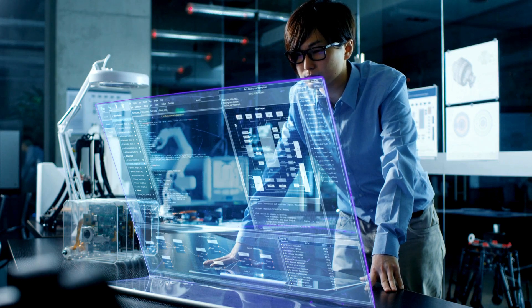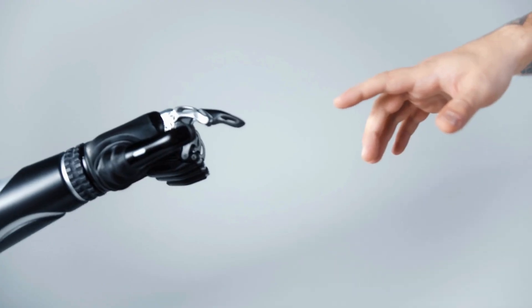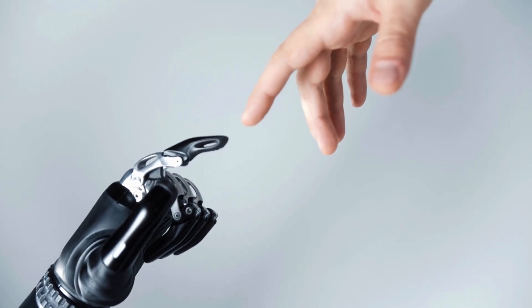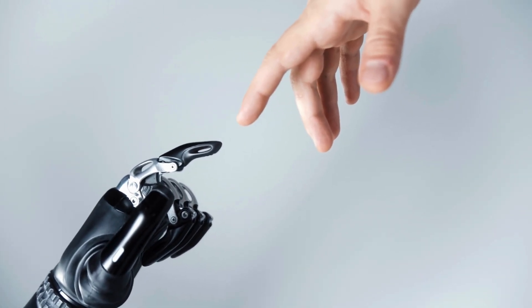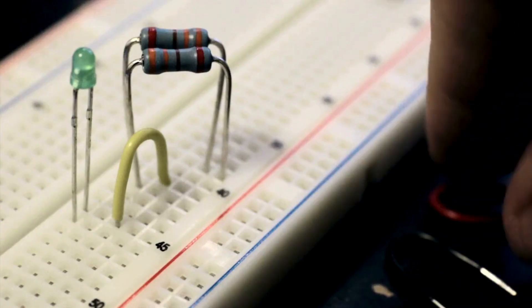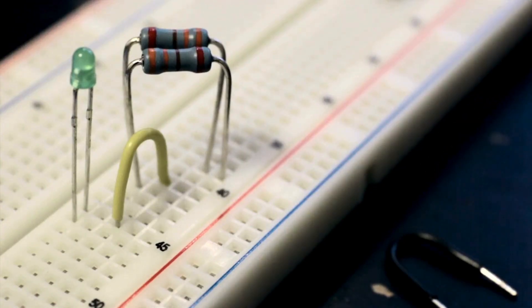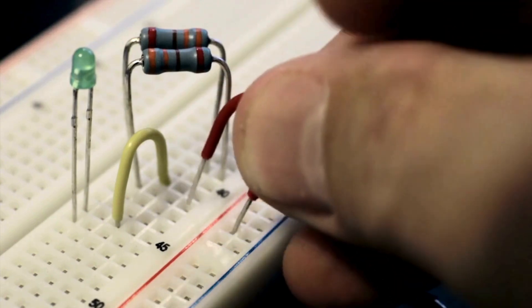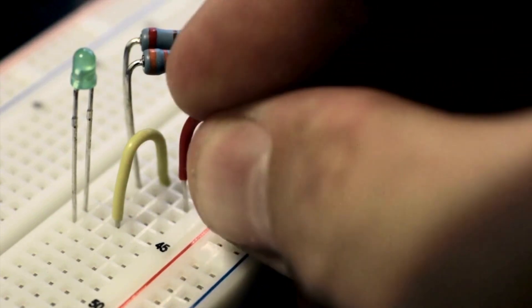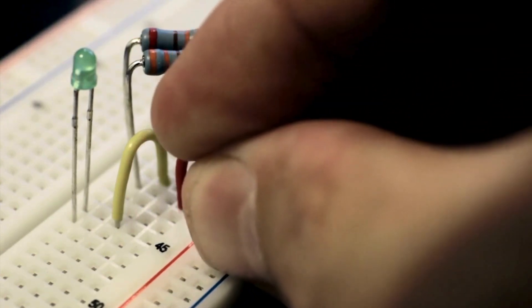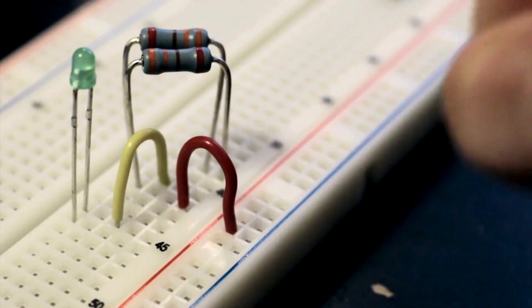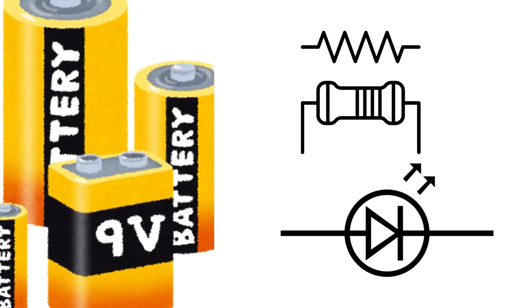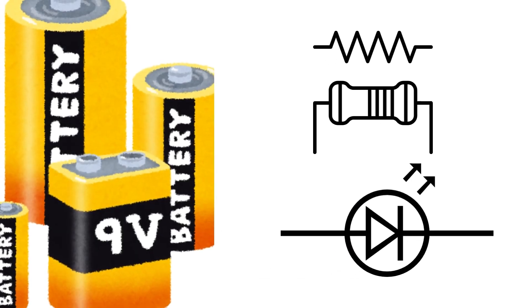Let's put Ohm's Law into practice by designing a simple circuit with a resistor, battery, and an LED. This will help us see how voltage, current, and resistance work together. Here's the plan: we'll connect our battery, resistor, and LED in series.